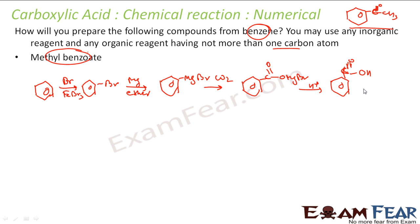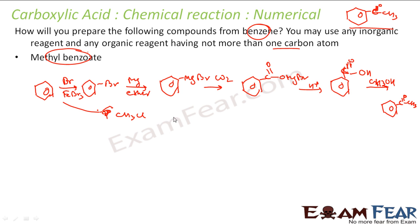Once you have COOH, do esterification with CH3OH to get methyl benzoate (Ph-CO-OCH3). Alternatively, you can react benzene directly with CH3Cl using AlCl3 in a Friedel-Crafts alkylation to get toluene, then oxidize with KMnO4 to get benzoic acid directly, and then esterify.